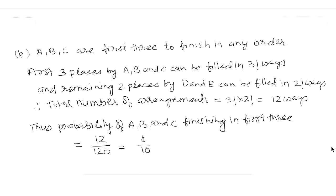Therefore, the answer to Part A — A, B and C finishing 1st, 2nd and 3rd respectively — is 1 upon 60. And the probability for A, B and C finishing in the first 3 in any order is 1 upon 10.